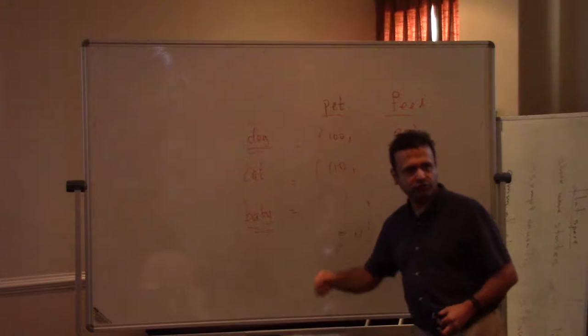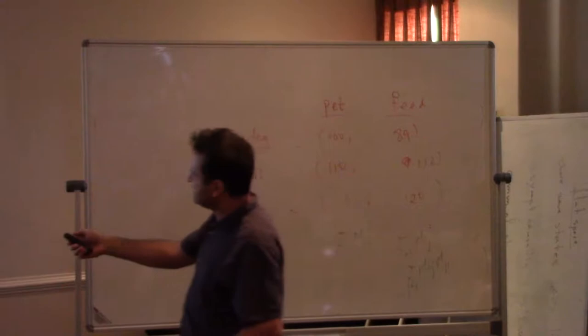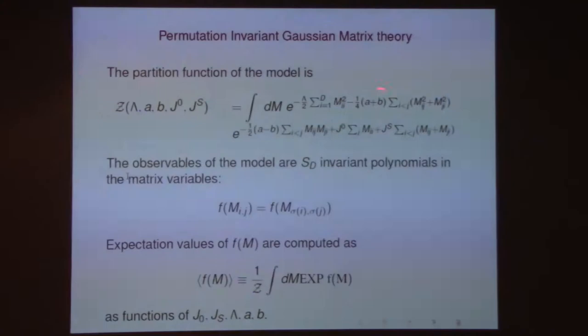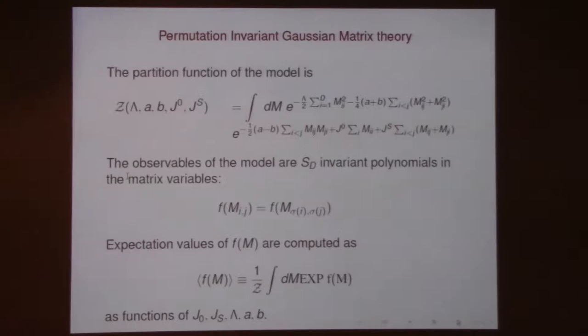The simplest thing one could think of is to take these quadratic permutation-invariant functions. This is a generalization of trace M². Because there are three such things, you have three parameters: λ, a, and b. So here is a matrix model which depends on five parameters — two linear ones and three quadratic ones. All these functions that appear in the exponent are permutation invariant.